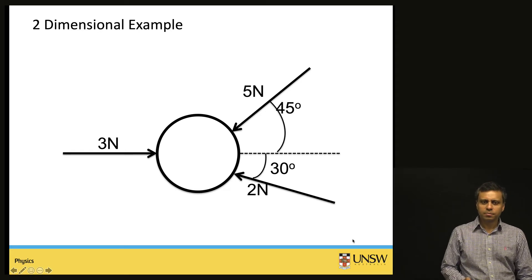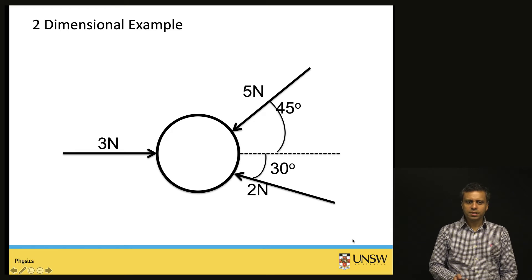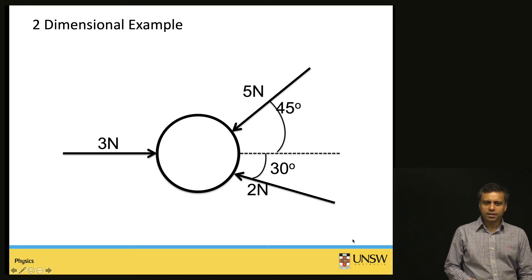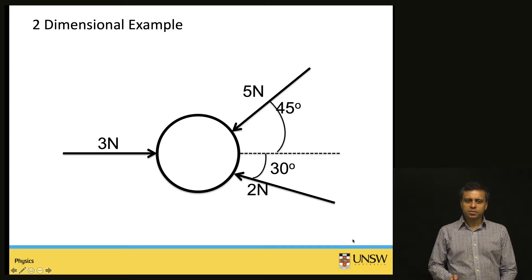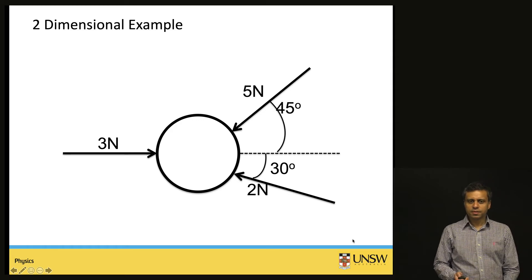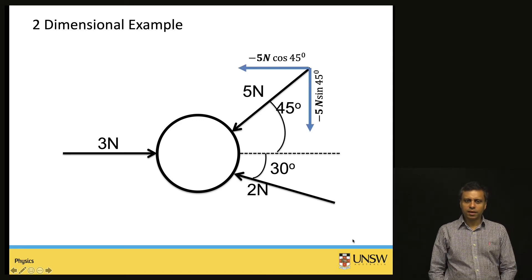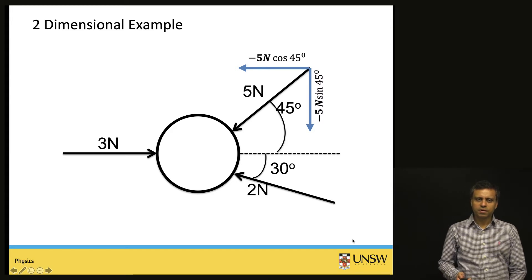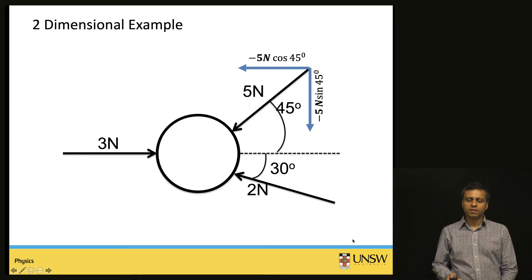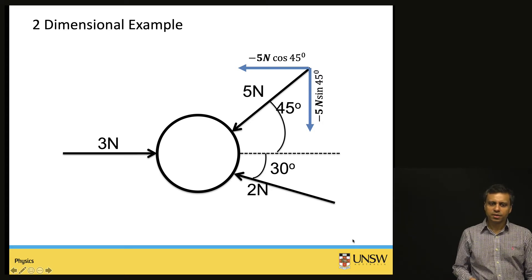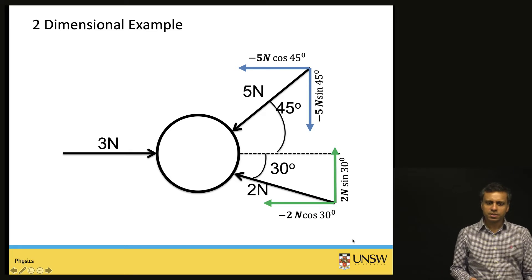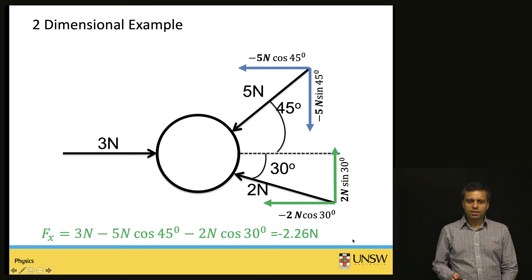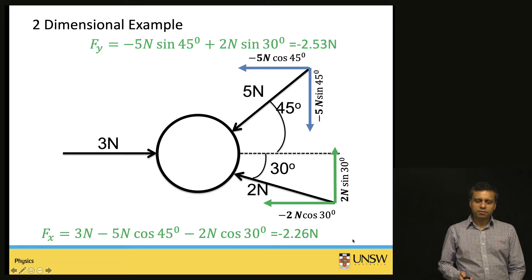Now let us take a look at a 2D example. There is a 3-Newton force acting horizontally on this object, a 5-Newton force acting at 45 degrees to the horizon, and a 2-Newton force acting at 30 degrees below the horizon. To deal with this problem, you have to decompose each of the forces into their x and y components, using the angle the forces make with the horizontal axis. Decomposing the 5-Newton force gives 5·sin45° for the y component and 5·cos45° for the x component. Similarly, decompose the 2-Newton force into x and y components. Then add all the x components and y components of the three forces to get the net or resultant force.